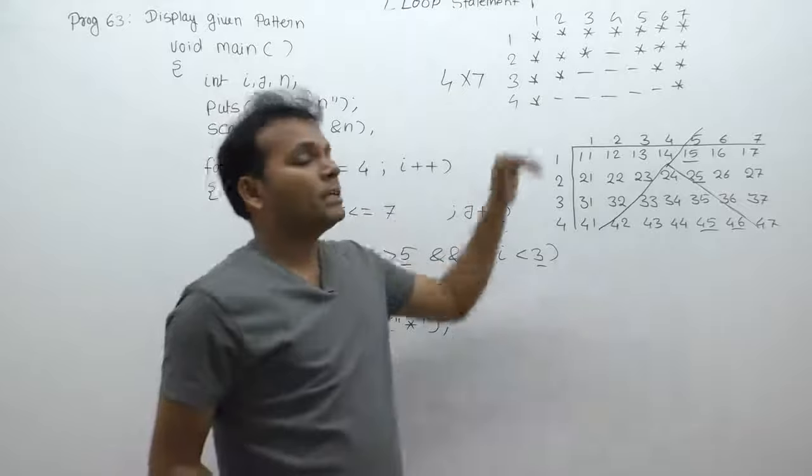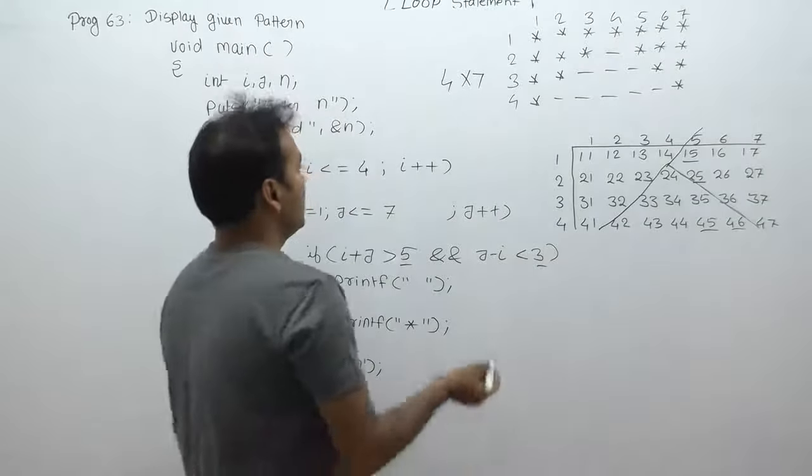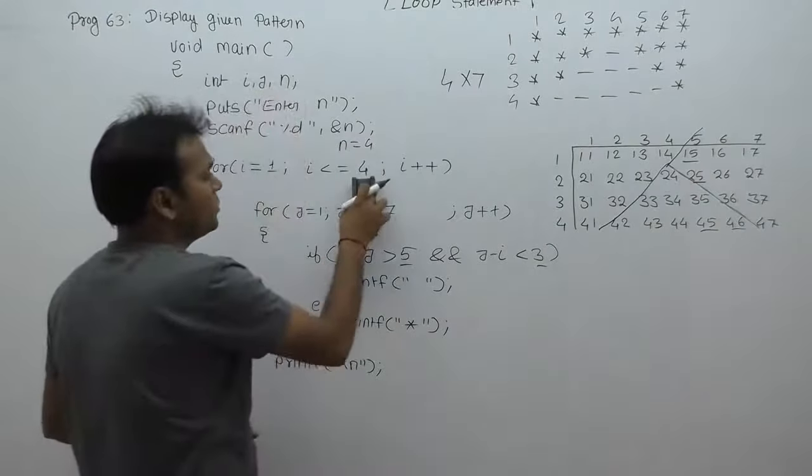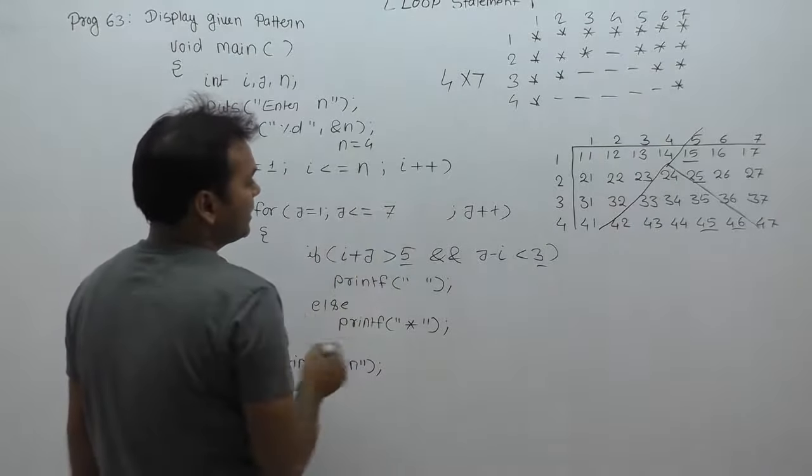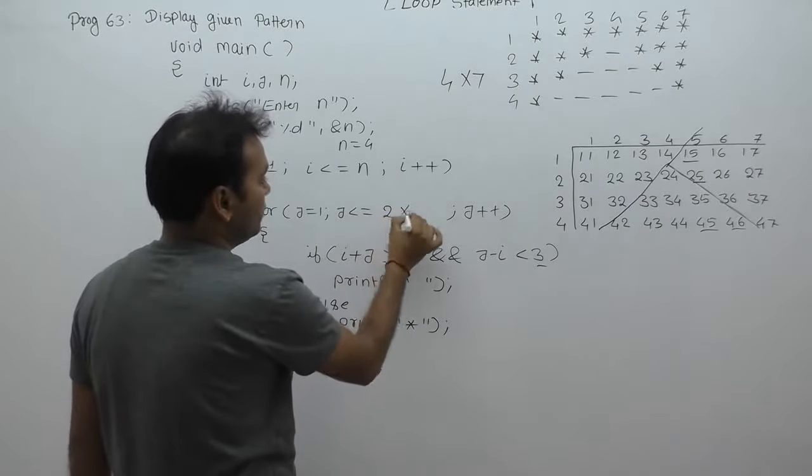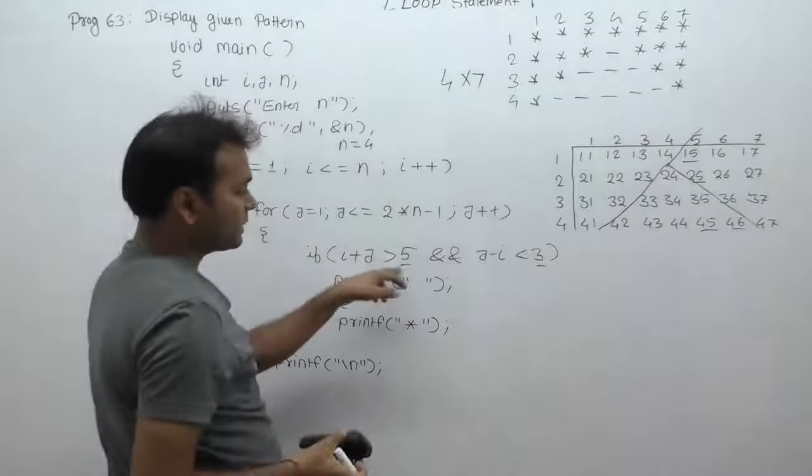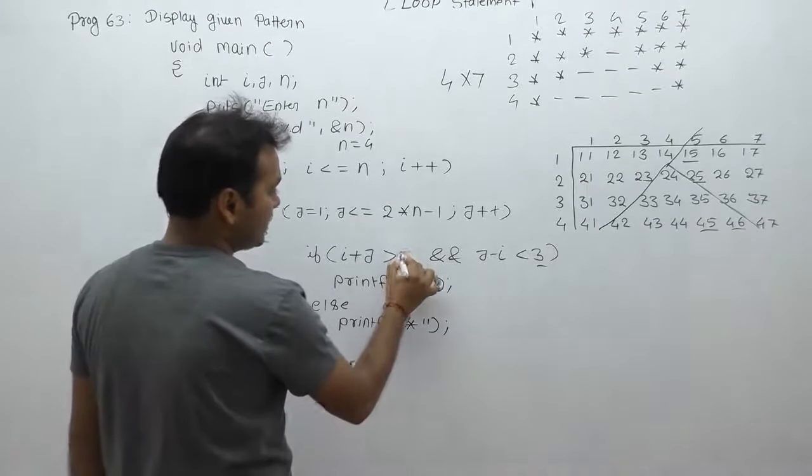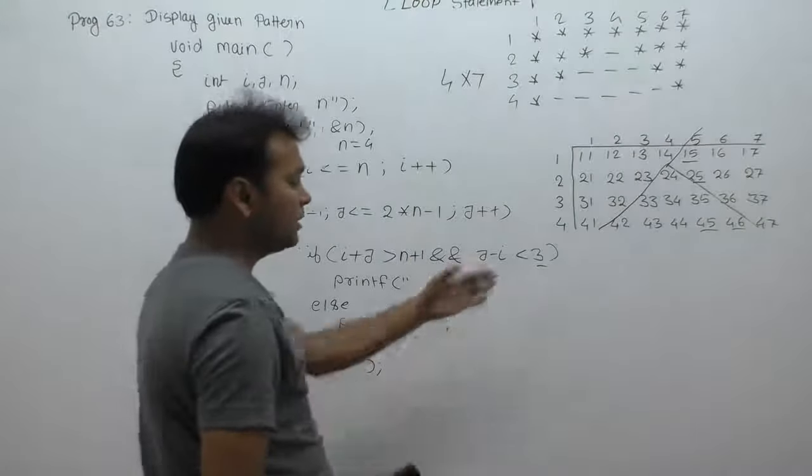Now, why 4 and 7? We express them in the form of n. Suppose the value of n is 4, then 7 is 2 times n minus 1. This condition becomes n plus 1.